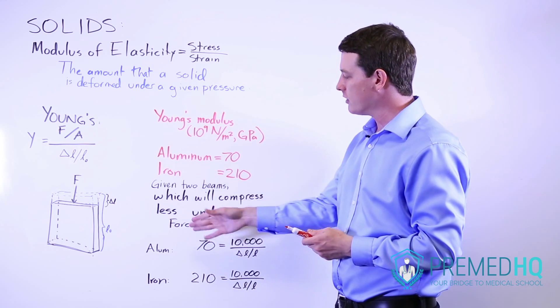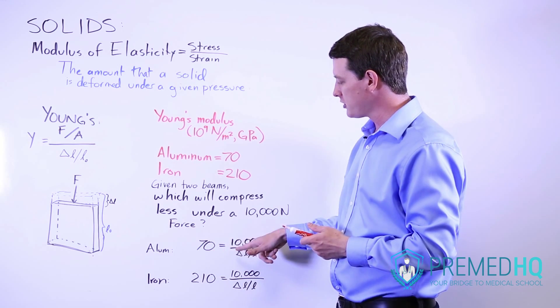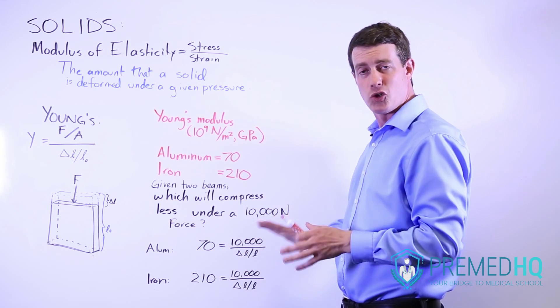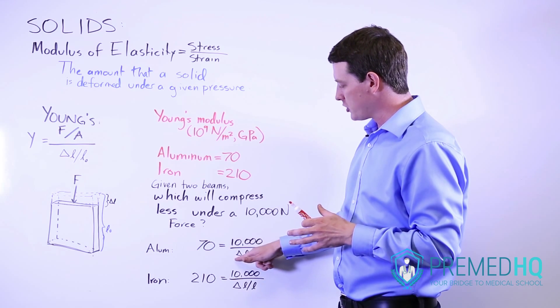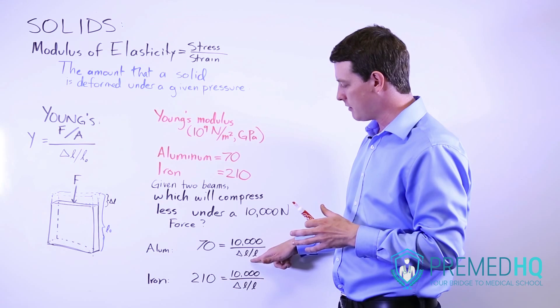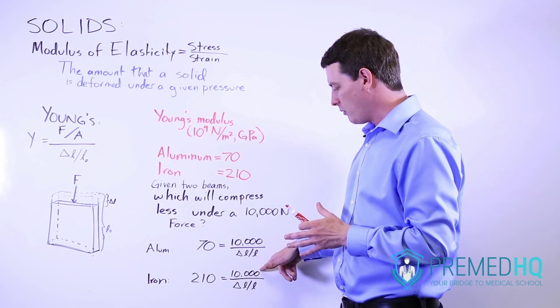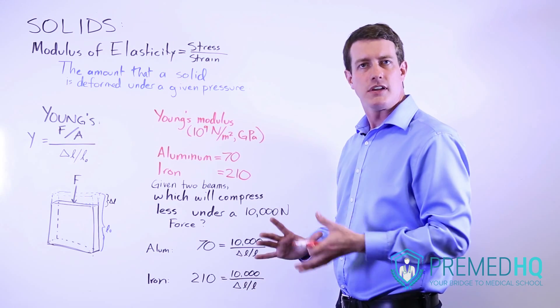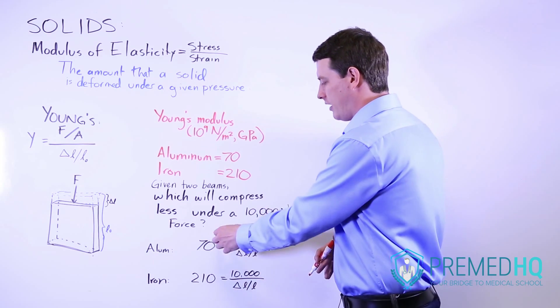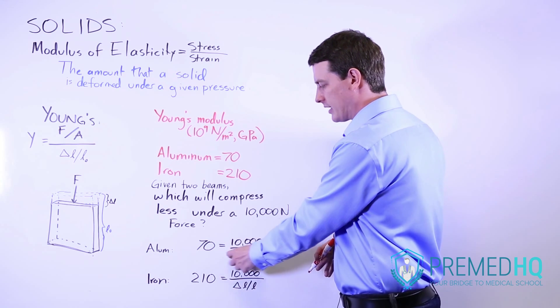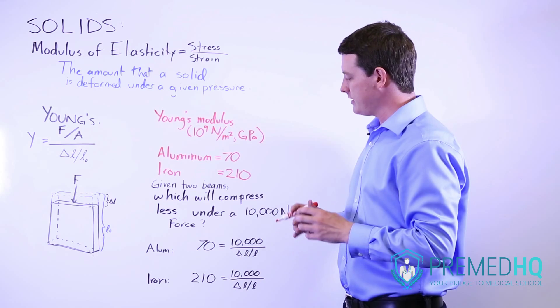And so what we have here with aluminum is we're going to break it down into simply the Young's modulus equals the force. We can even ignore the surface area in this case. And then we're just trying to figure out how big does this number on the bottom have to be versus iron it's 210 with the same numerator and obviously some change.